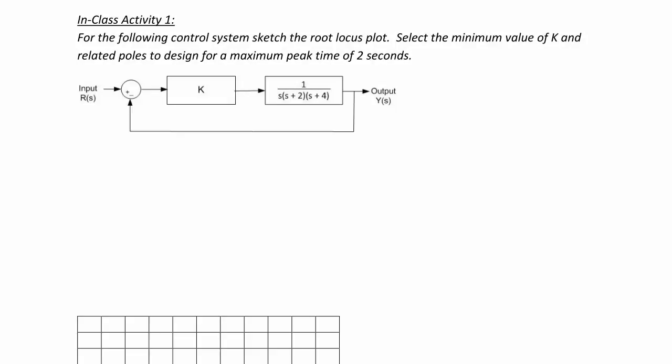In Class Activity 1, for the following control system, sketch the root locus plot. Select the minimum value of k and related poles to design for a maximum peak time of 2 seconds. First, let's focus on sketching the root locus plot. The open loop gain is k over s times s plus 4.